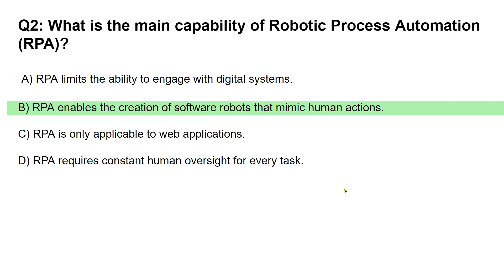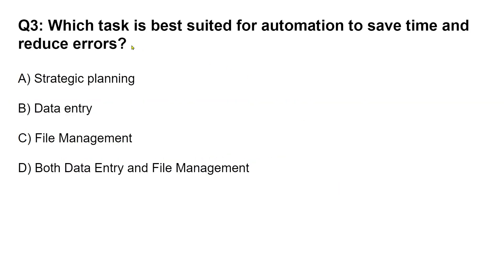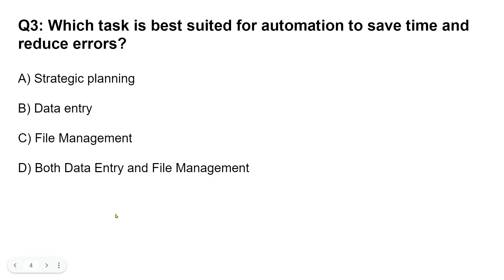Let's move on to the next question: Which task is best suited for automation to save time and reduce errors? Here are your options: A) Strategic planning. B) Data entry and file management. C) Both data entry and file management. Comment for question three — whatever the first thought came to your mind after reading the question, comment it as 'Question 3: A' or whichever option you choose.